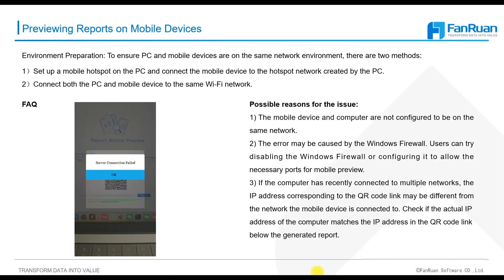When you preview reports on mobile devices, you may encounter a notice indicating server connection failed. There are three reasons. First, the mobile device and computer are not configured to be on the same network. Second, the error may be caused by the Windows Firewall — users can try disabling the Windows Firewall or configuring it to allow the necessary ports for mobile preview. Third, the computer is connected to multiple networks in a short time. You need to check if the actual IP address of the computer matches the IP address in the QR code link below the generated report.